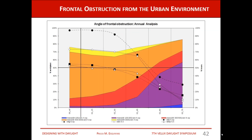Looking at frontal obstruction from the urban environment, we can see that a frontal obstruction higher than 45 degrees means we are not meeting the daylight sufficiency criterion and we are getting larger portions of the work plane with low illuminances, requiring the introduction of artificial lighting systems. Conversely, without the urban environment, we need to control the portion of the work plane with illuminances above 3,000 lux by introducing shading corrections.